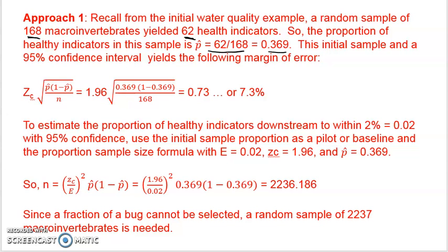The initial sample, and we did this in the earlier video, and a 95% confidence interval yielded the margin of error. The critical value times square root of p-hat times 1 minus p-hat over n. When you put the numbers in from the problem, sample size is 168, p-hat is 0.369.